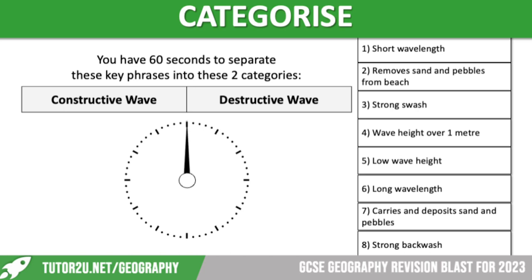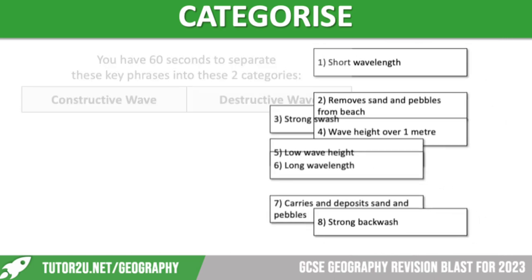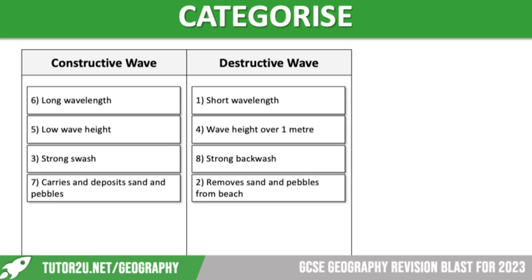Hopefully you've managed to get those into the correct category. Our constructive waves have a long wavelength, a low wave height, a strong swash which enables them to build the beach up, and they carry and deposit sand and pebbles. In comparison, destructive waves have a short wavelength, the wave height is over one metre, they have a strong backwash, and they remove sand and pebbles from the beach.